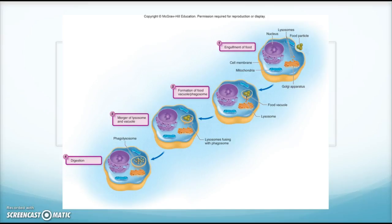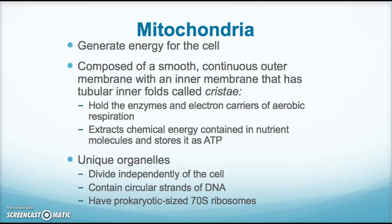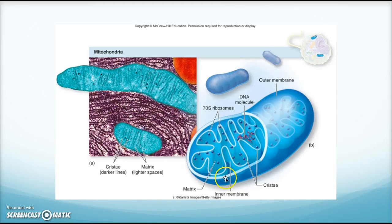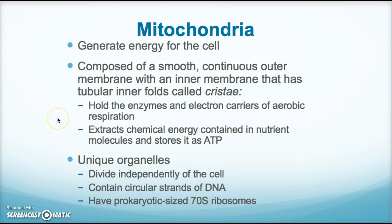The next organelle is the mitochondria — the powerhouse of the cell, where energy is generated. It has a smooth outer membrane and inner folds called cristae. On the cristae there are enzymes and electron carriers that help in aerobic respiration, allowing the mitochondria to use oxygen to make energy. It extracts chemical energy from nutrient molecules and stores it as ATP when oxygen is present.